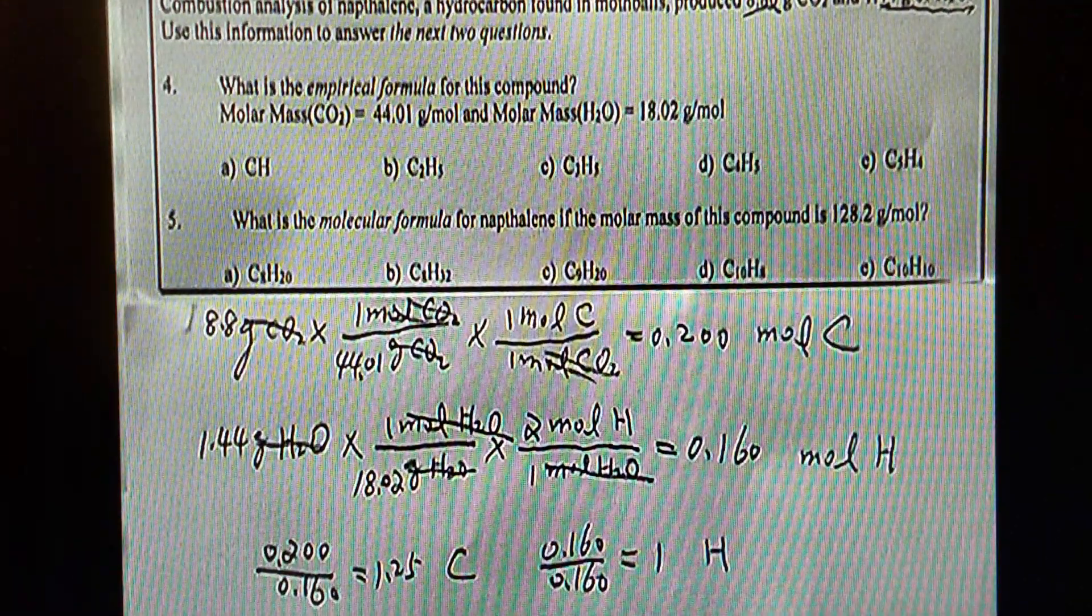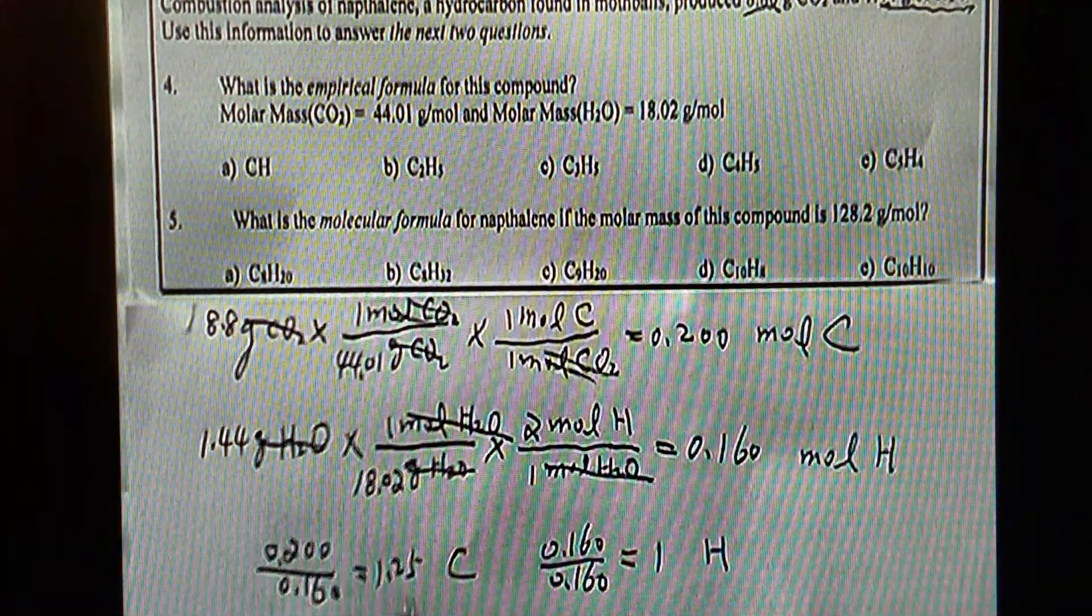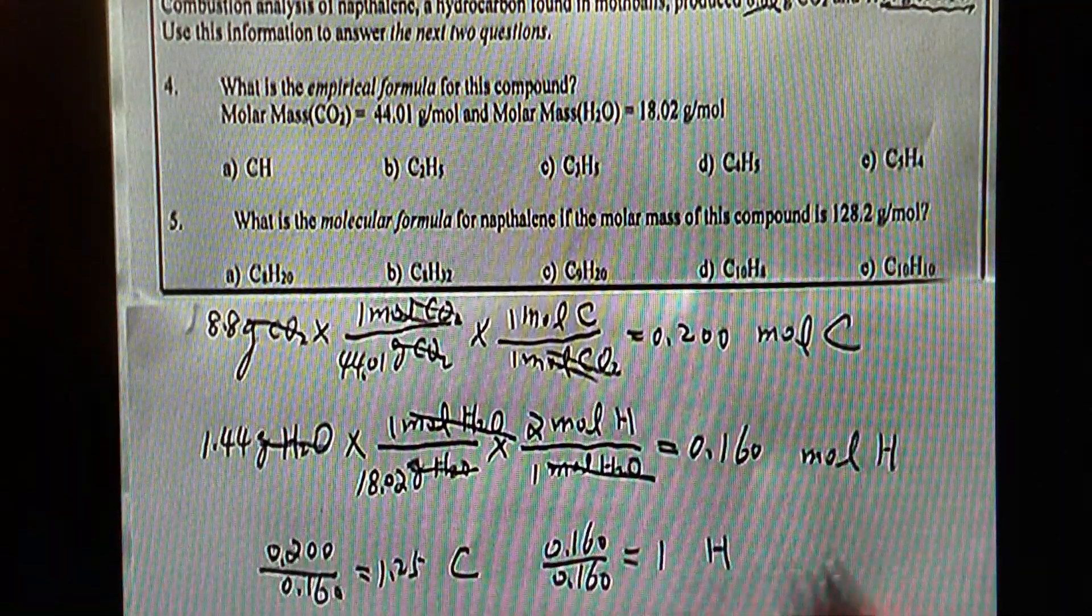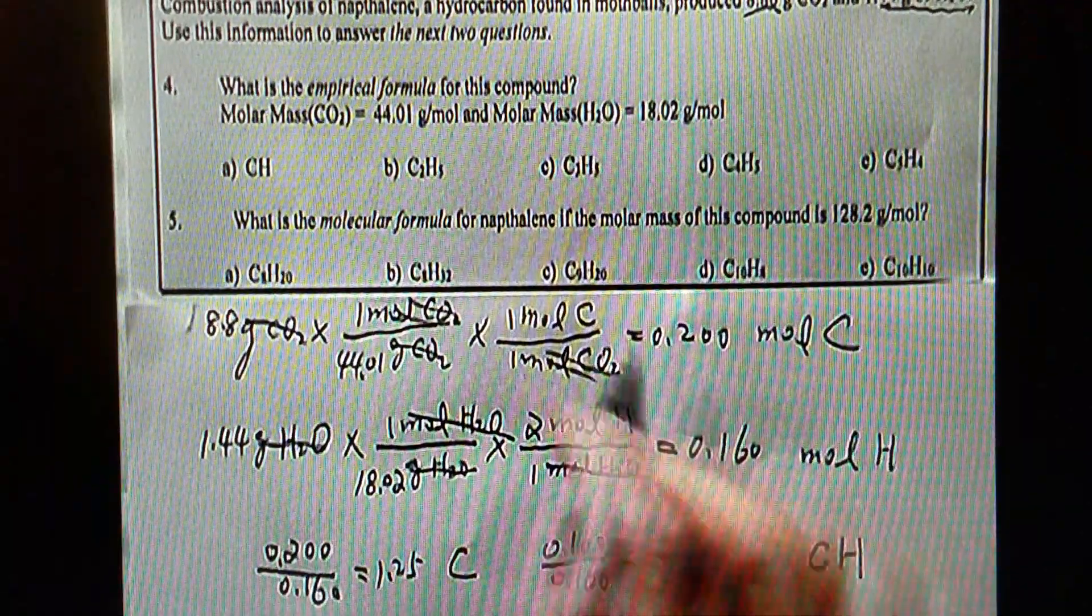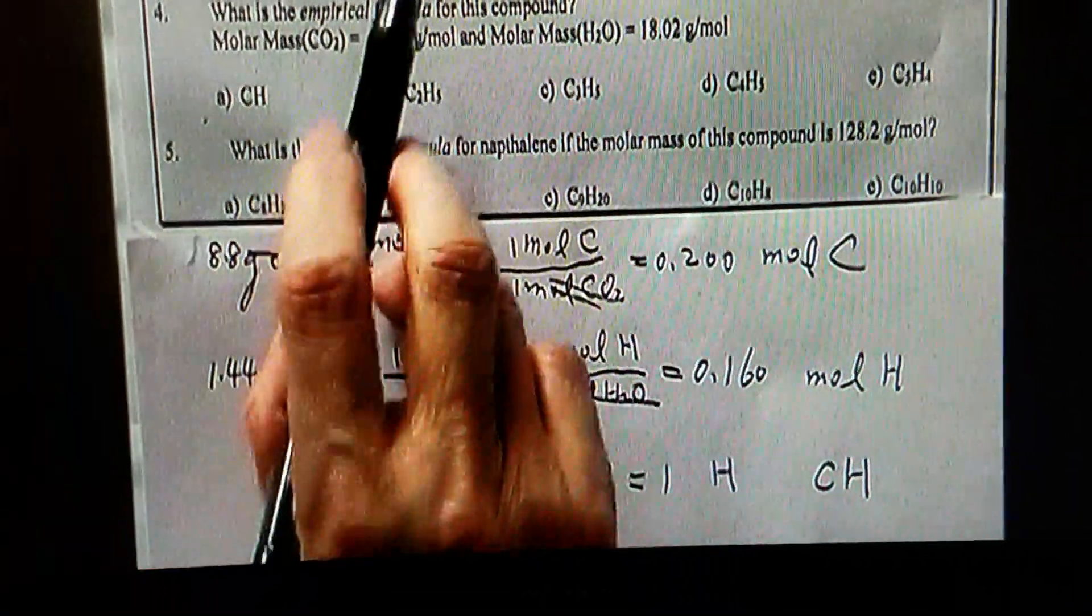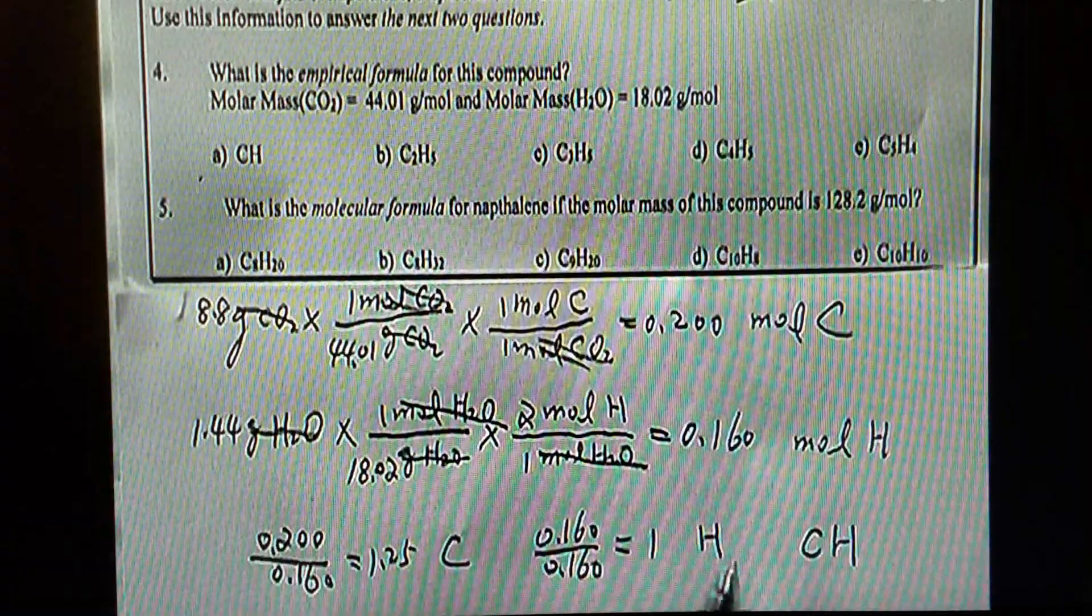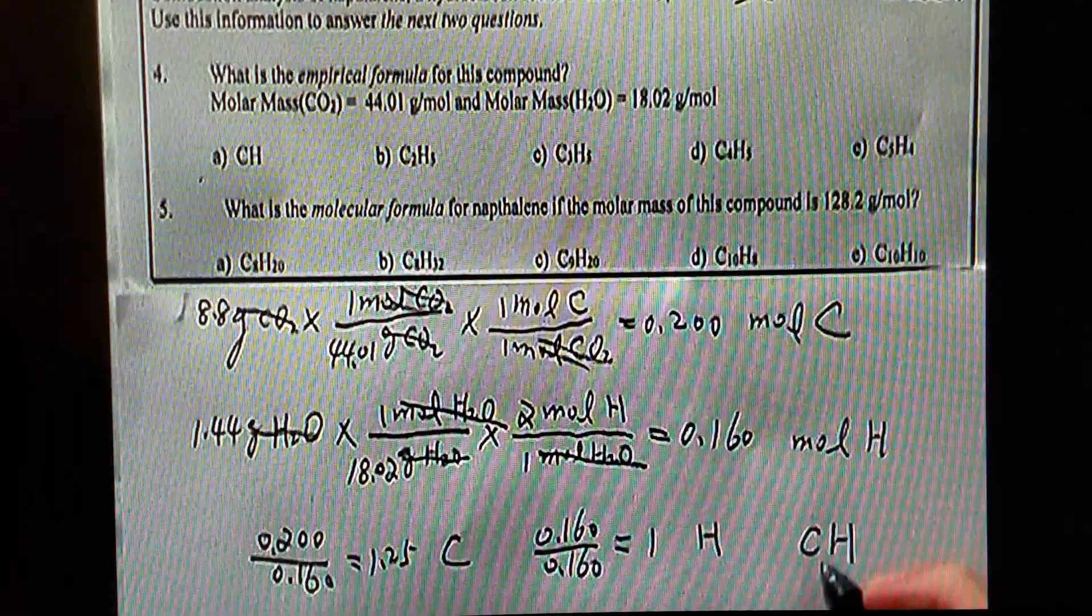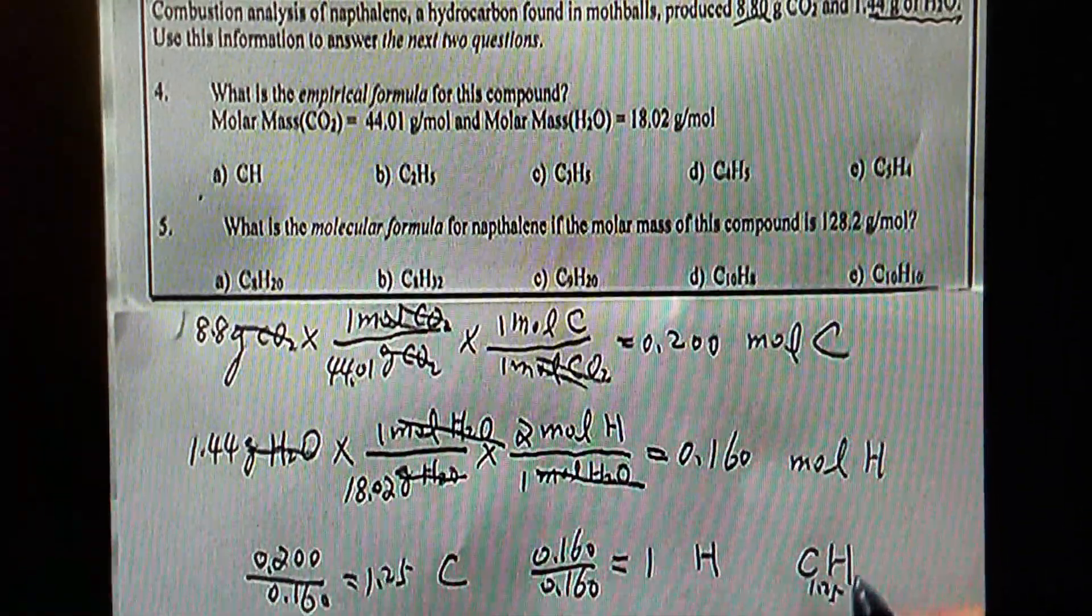You can consider this as a mole ratio or maybe a number of items ratio. Now you see, technically, we can write - because in all of the answers should just contain carbon and hydrogen, that's what hydrocarbon is - we just need to find out what the subscripts are. In this case, technically, we can write 1.25 then H is 1, I don't write it.